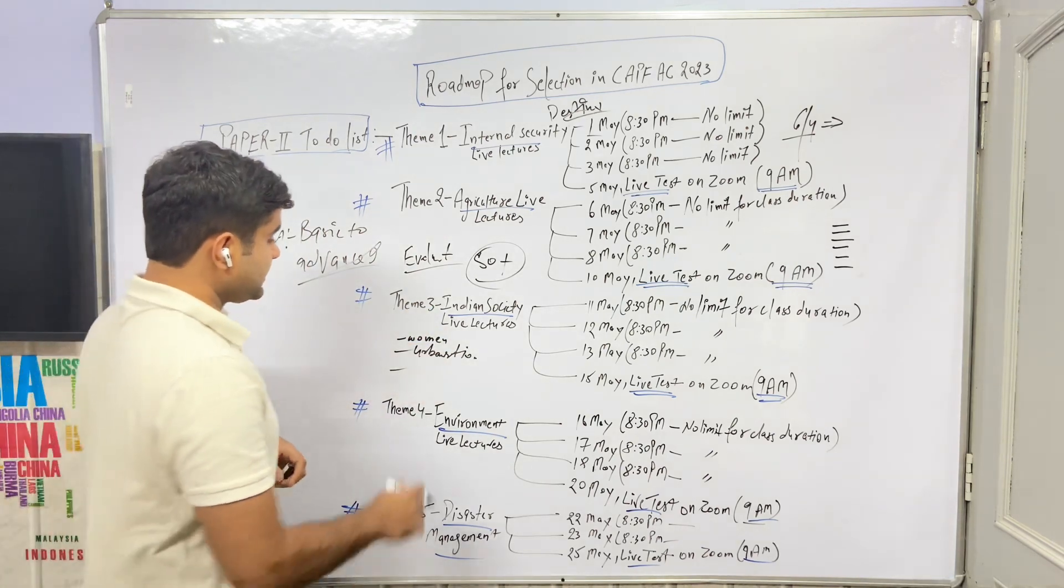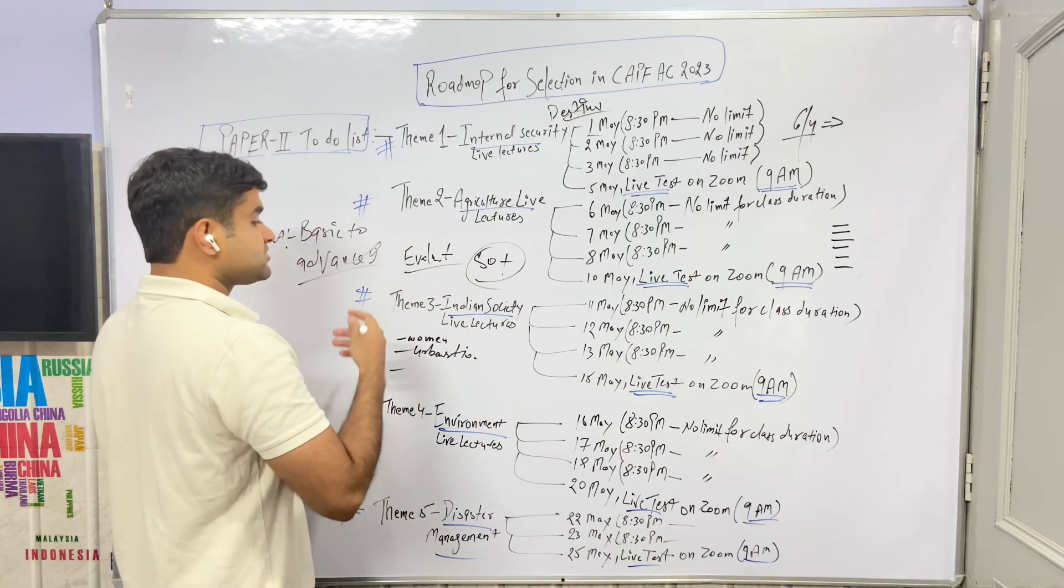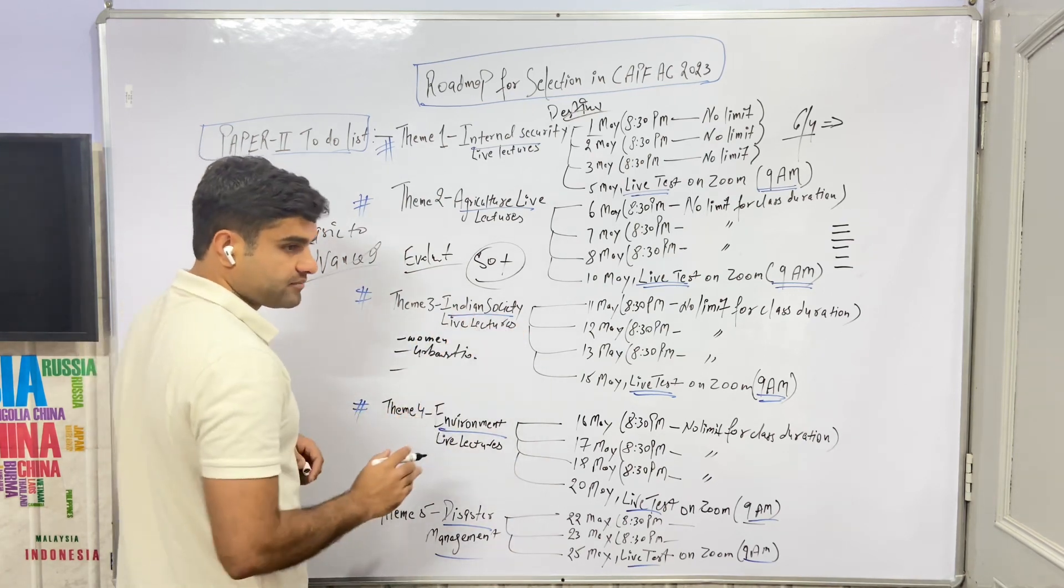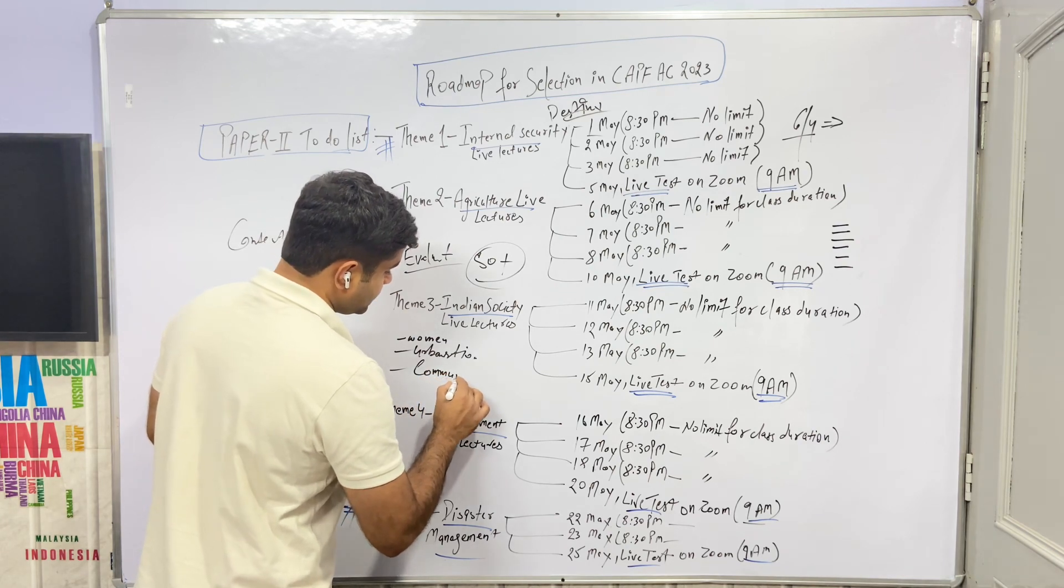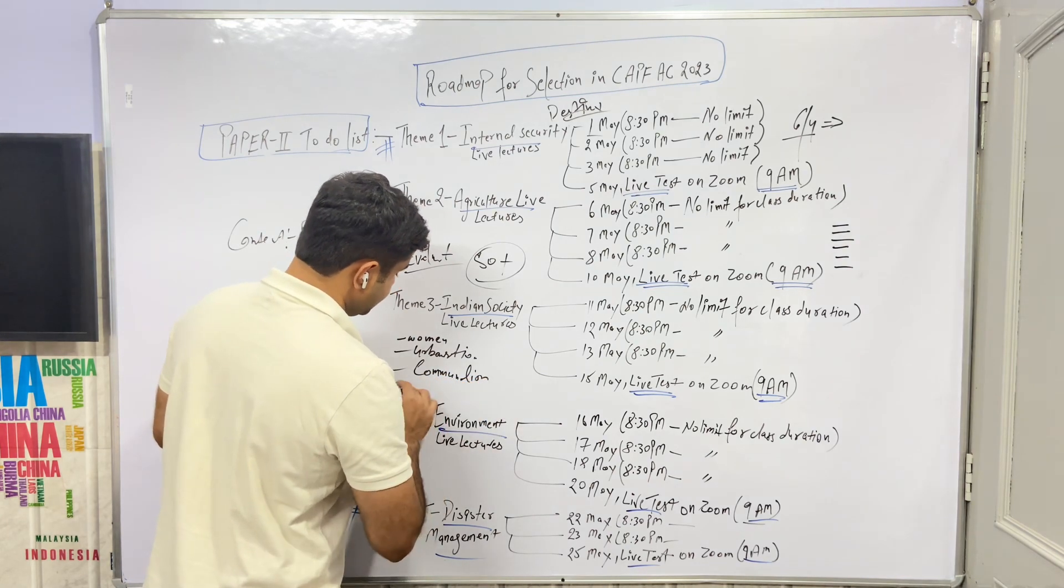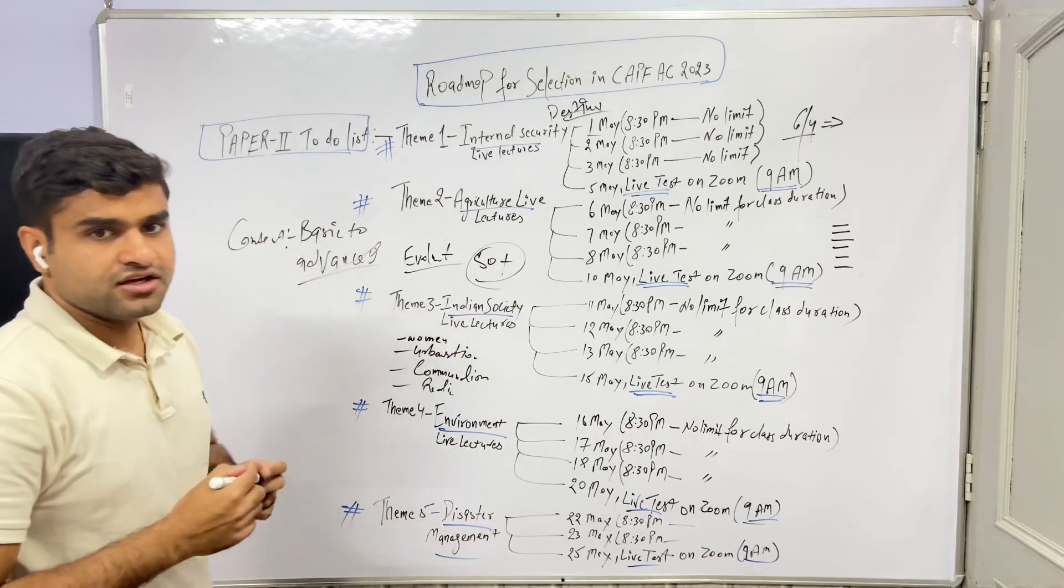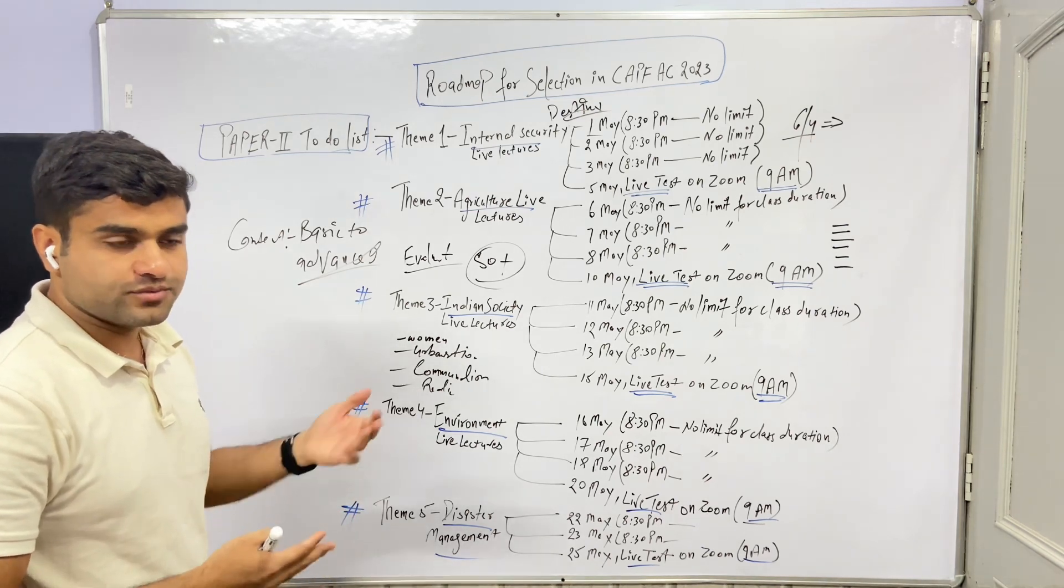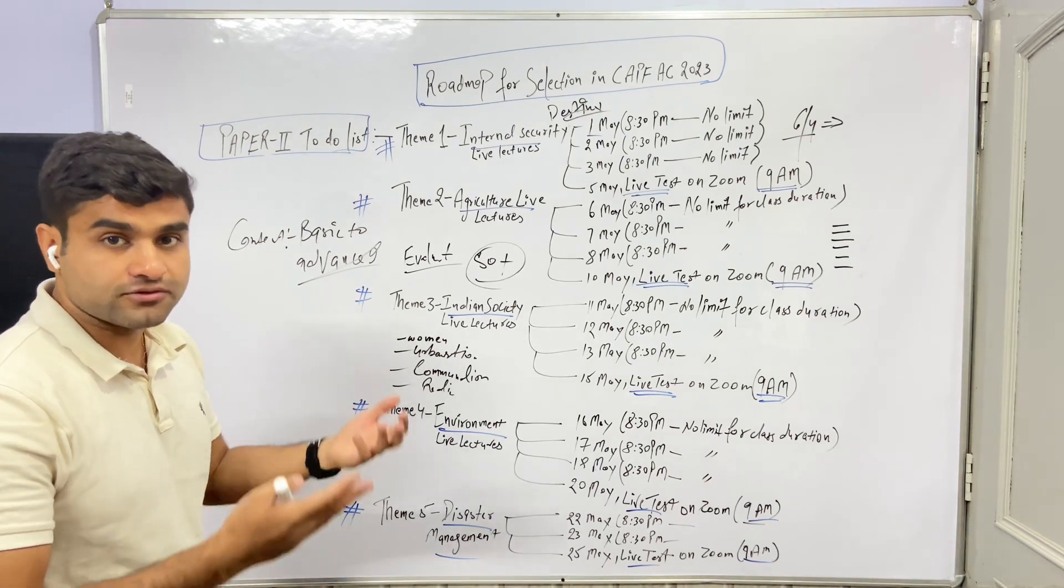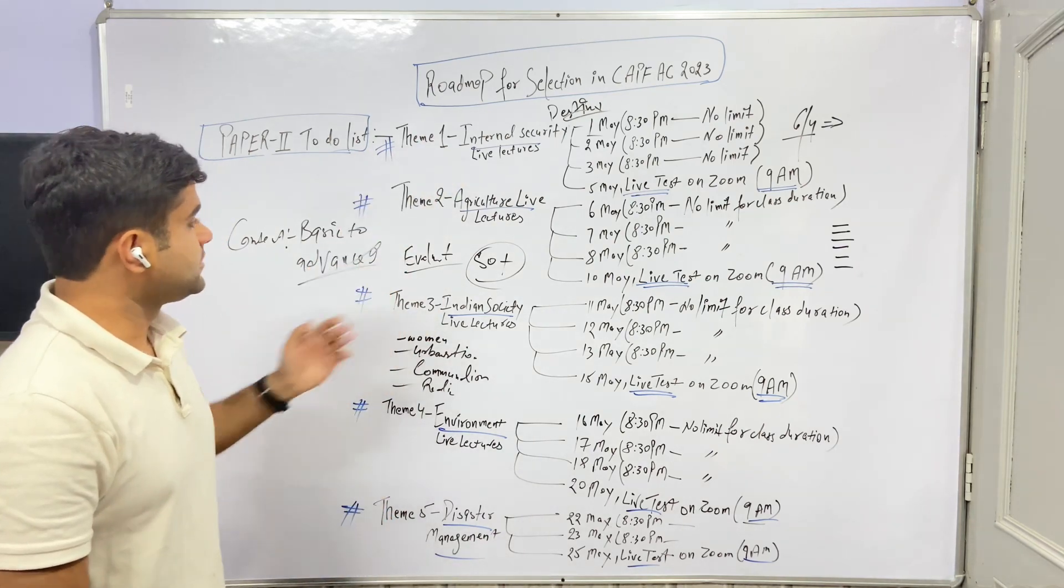Urbanization's impact on society - we discuss family and many other things. Communalism is very important. Radicalization. If we talk about internal security: fundamentalism, militancy - Jammu Kashmir militancy, new phase of militancy, hybrid militancy, then Punjab militancy.